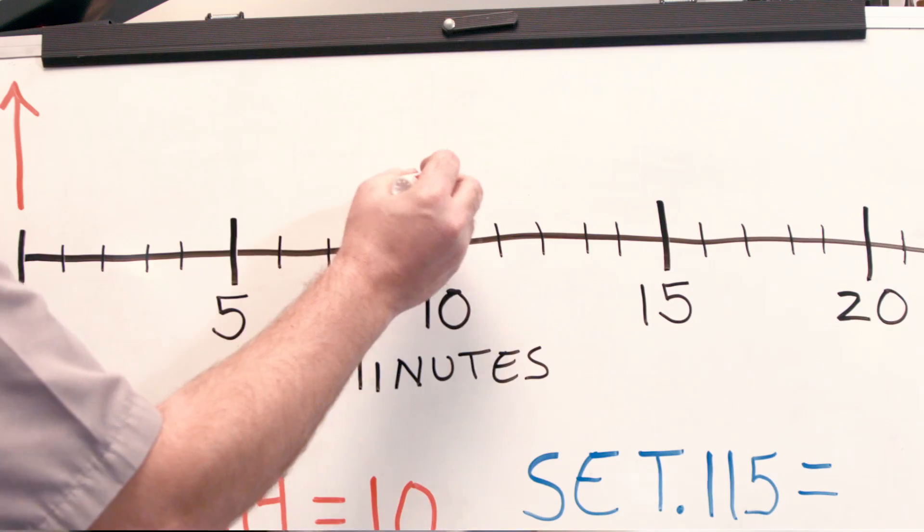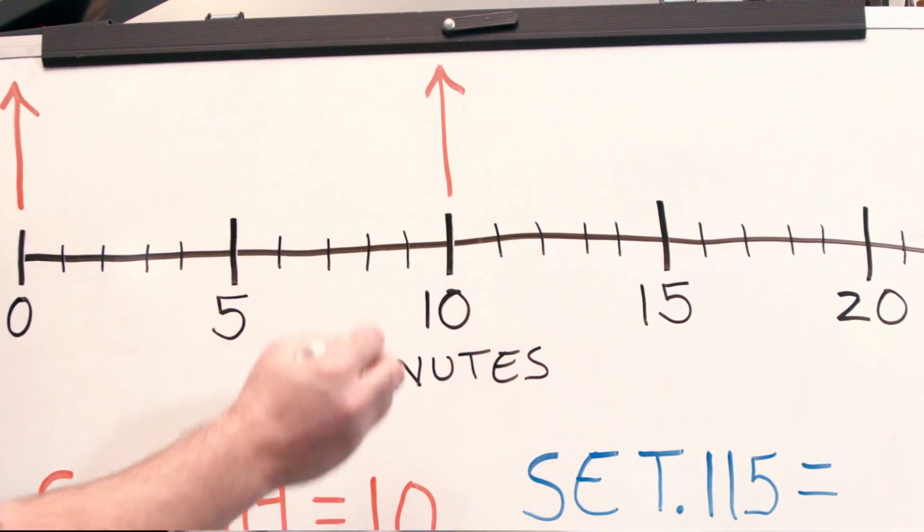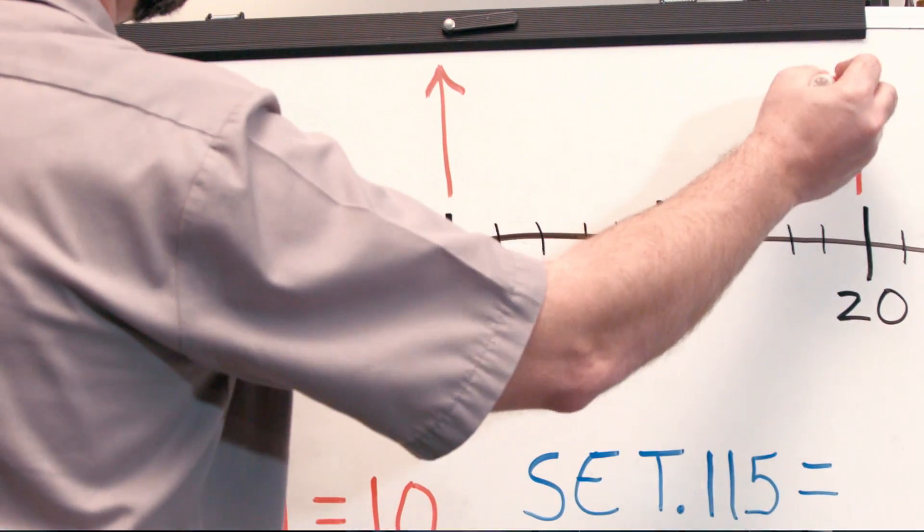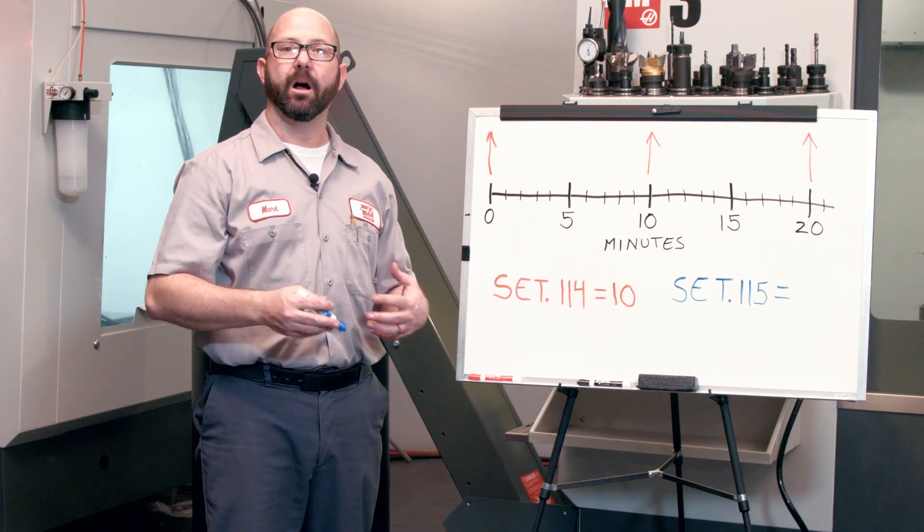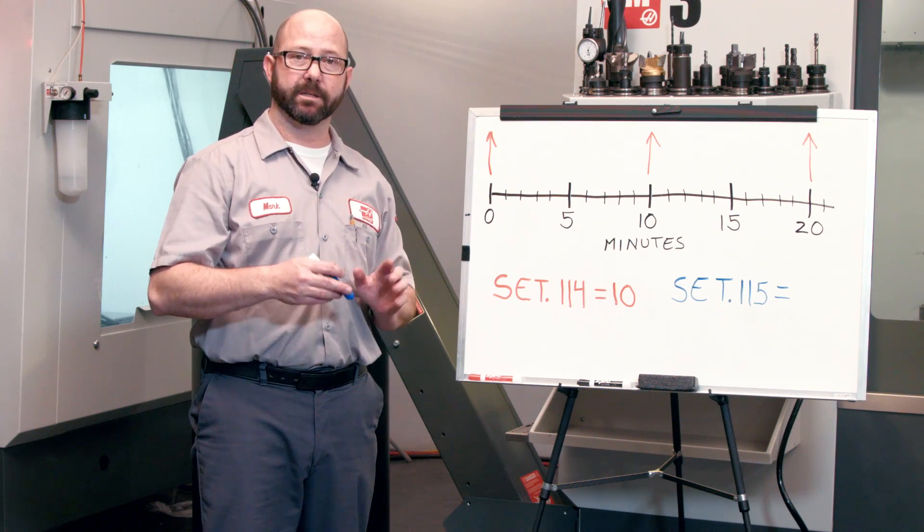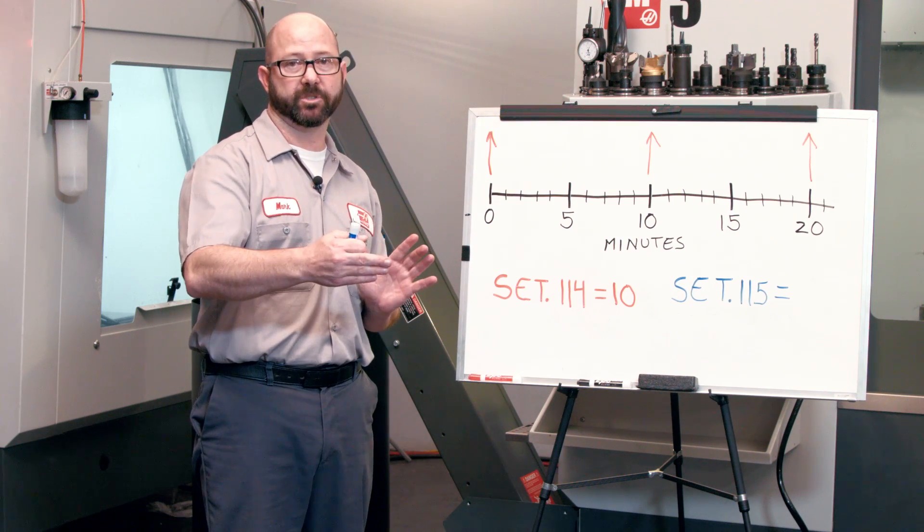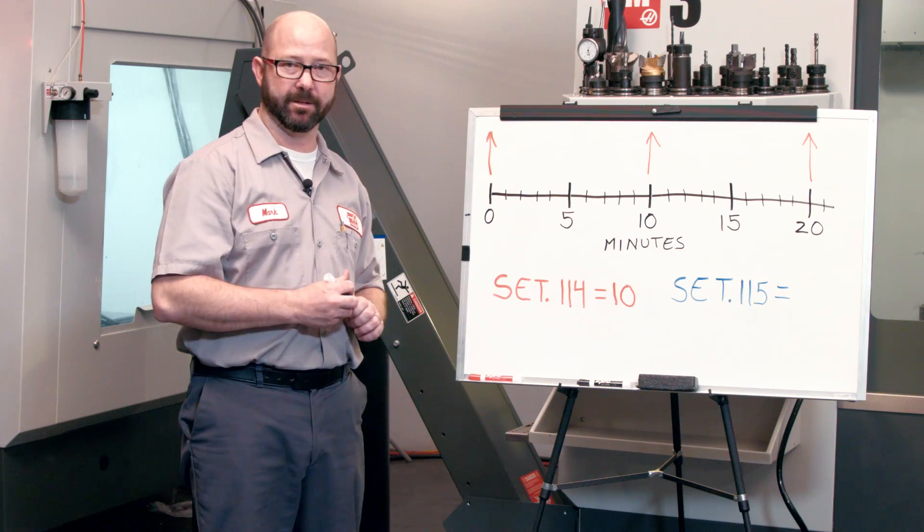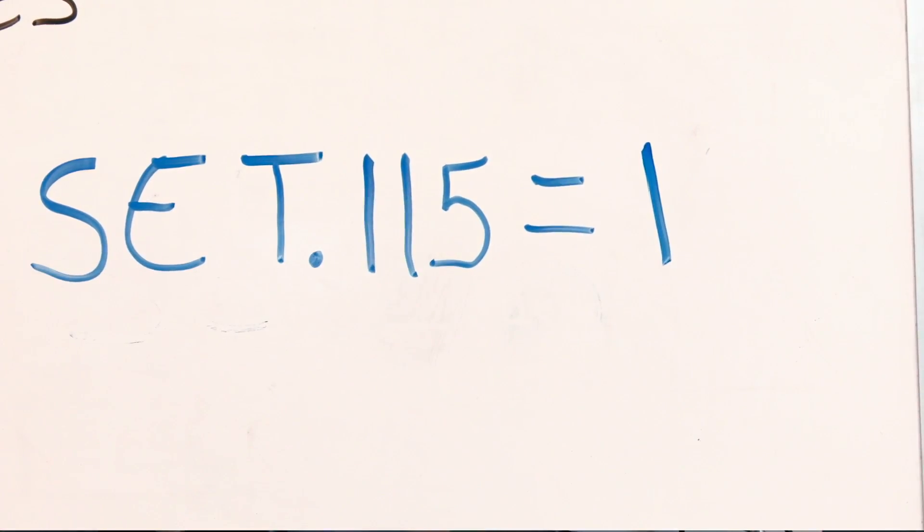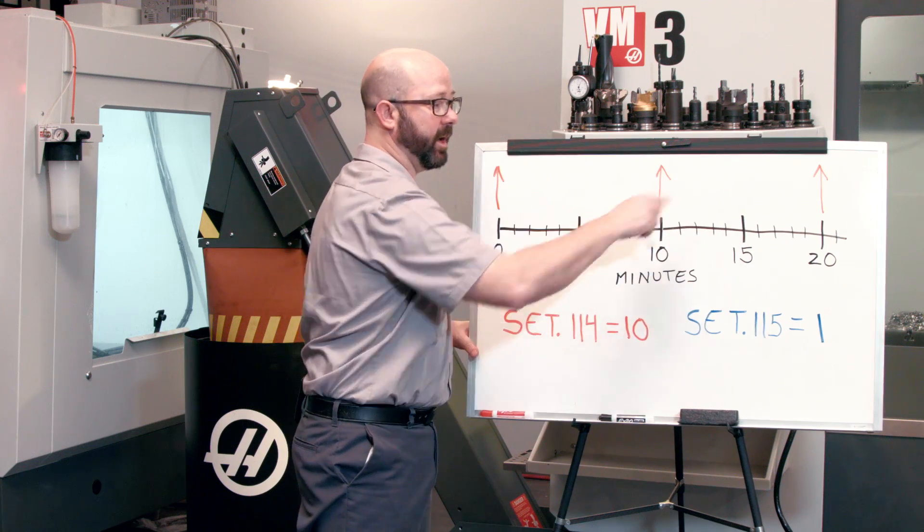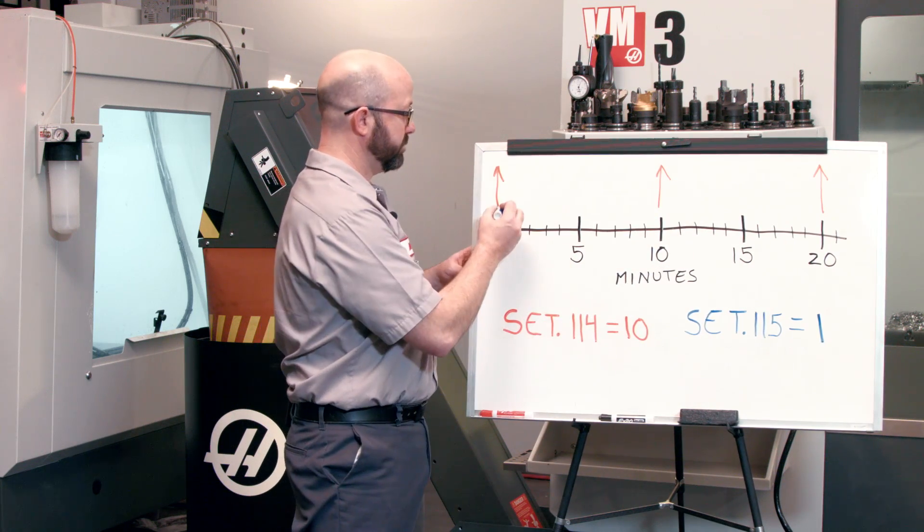Right there at zero, here at 10, there at 20. Every 10 minutes, that conveyor is going to kick on. Now, setting 115 is our conveyor on time in minutes. This is going to set how long the conveyor is going to run each time it kicks on. If we set that to a one, then each time our conveyor kicks on, it's going to run for one minute.